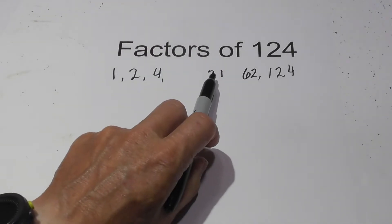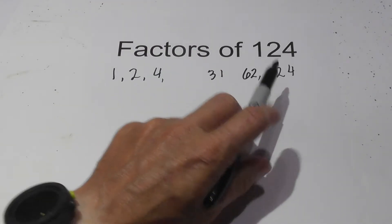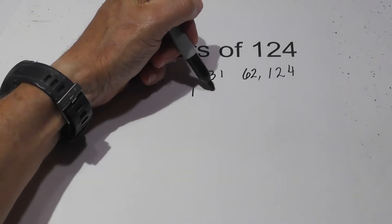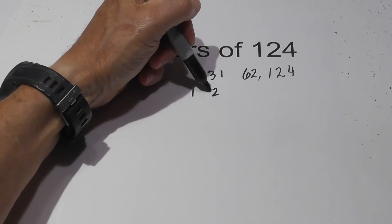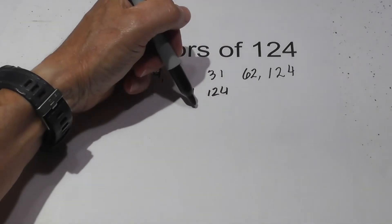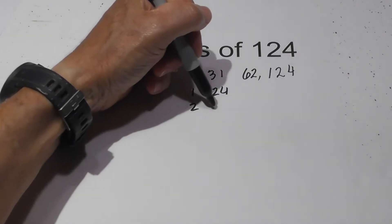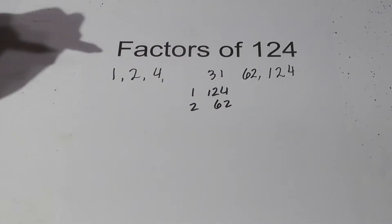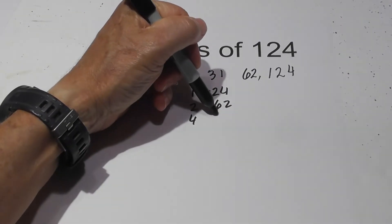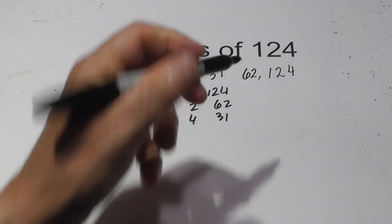The factors are 1, 2, 4, 31, 62, and 124. And if you'd like them in pairs it's 1 times 124, 2 times 62, and 4 times 31.